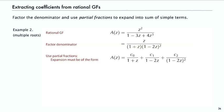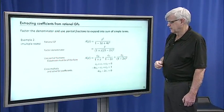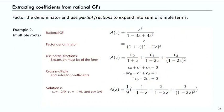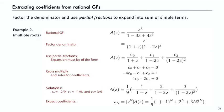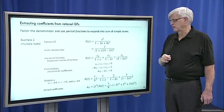The same basic method works — cross multiply, and now we have possible constant terms, z terms, and z squared terms, giving three equations and three unknowns. Solving gives C0 equals minus 2/9, C1 equals minus 1/9, and C2 equals 3/9. From that, we've broken the function into simpler terms we know how to expand: the coefficient of z to the n in 1 over 1 plus z is minus 1 to the n, in the 1 minus 2z term it's 2 to the n, and for 3 over 1 minus 2z squared it's 3n times 2 to the n, giving an exact formula for the coefficients.